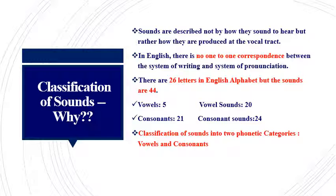It is imperative for us to know more about how all consonants, although categorized as sounds produced when the air from the lungs does not escape freely, are not all similar. For example, when we articulate the sound /k/, for a fraction of a second the air that comes out of the lungs is imprisoned in the mouth because the back of the tongue touches the velum or soft palate. That closes the oral passage completely, and the air escapes only when the back of the tongue is removed from the velum.